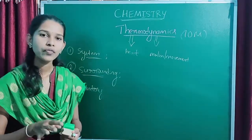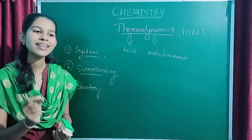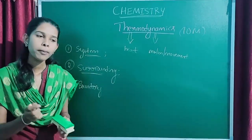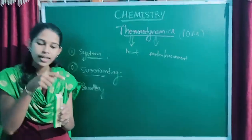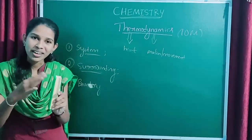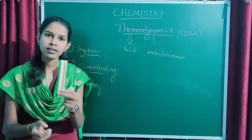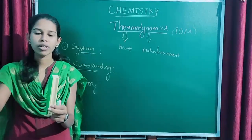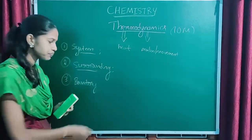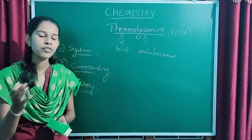Practically, we don't consider the entire universe as the surrounding, because it doesn't make any sense to consider the entire universe as the surrounding. For practical purpose, the region of space in the neighborhood of the system is considered as the surrounding. That means the region of space which has some interaction with the system is considered as surrounding. For example, if I take this duster as the system, then this room will be its surrounding. Now let's move on to the term boundary. Boundary is a layer which separates the system from the surrounding.